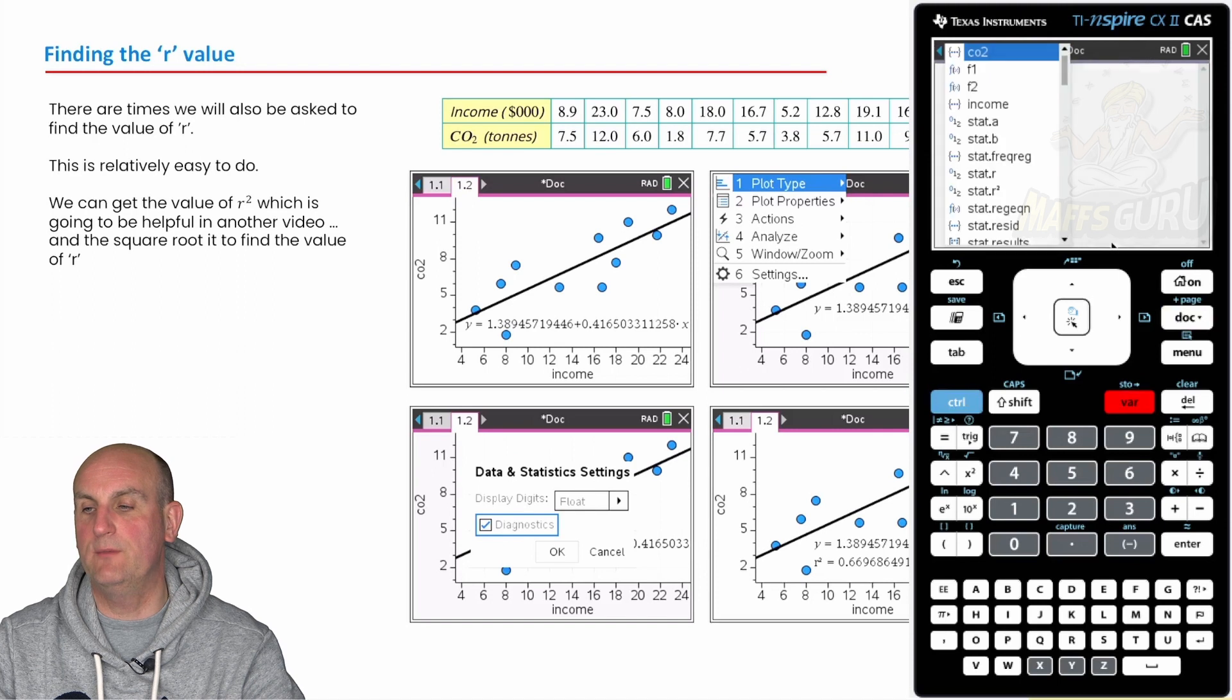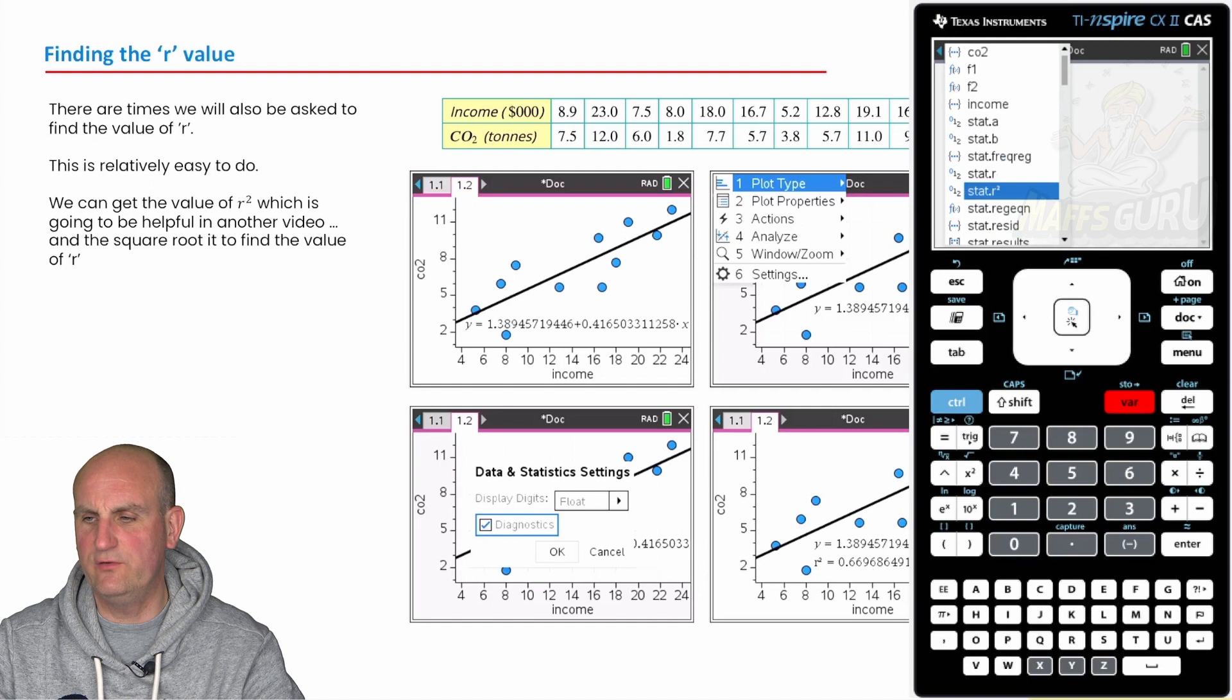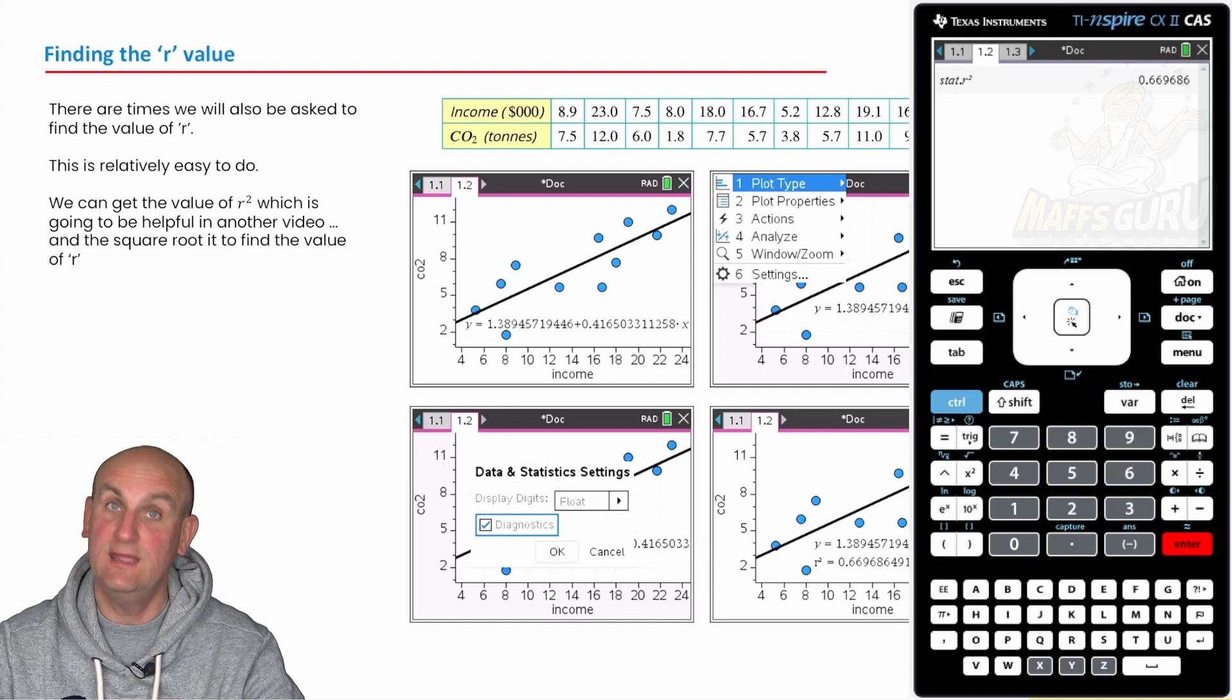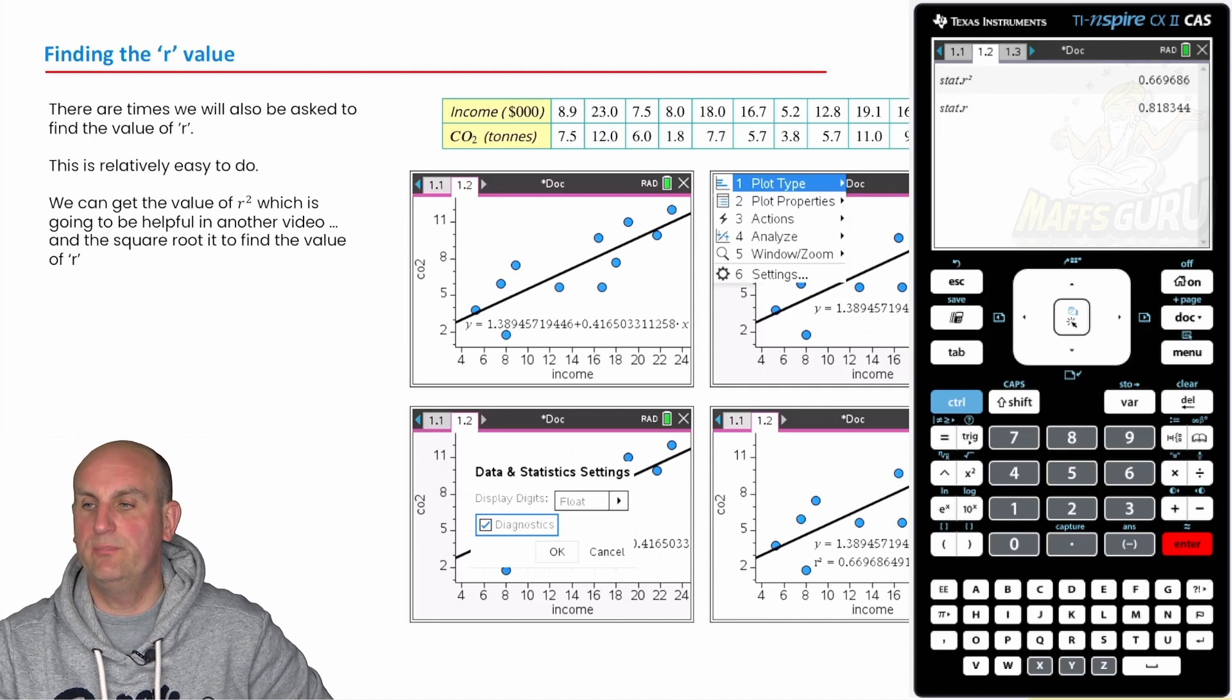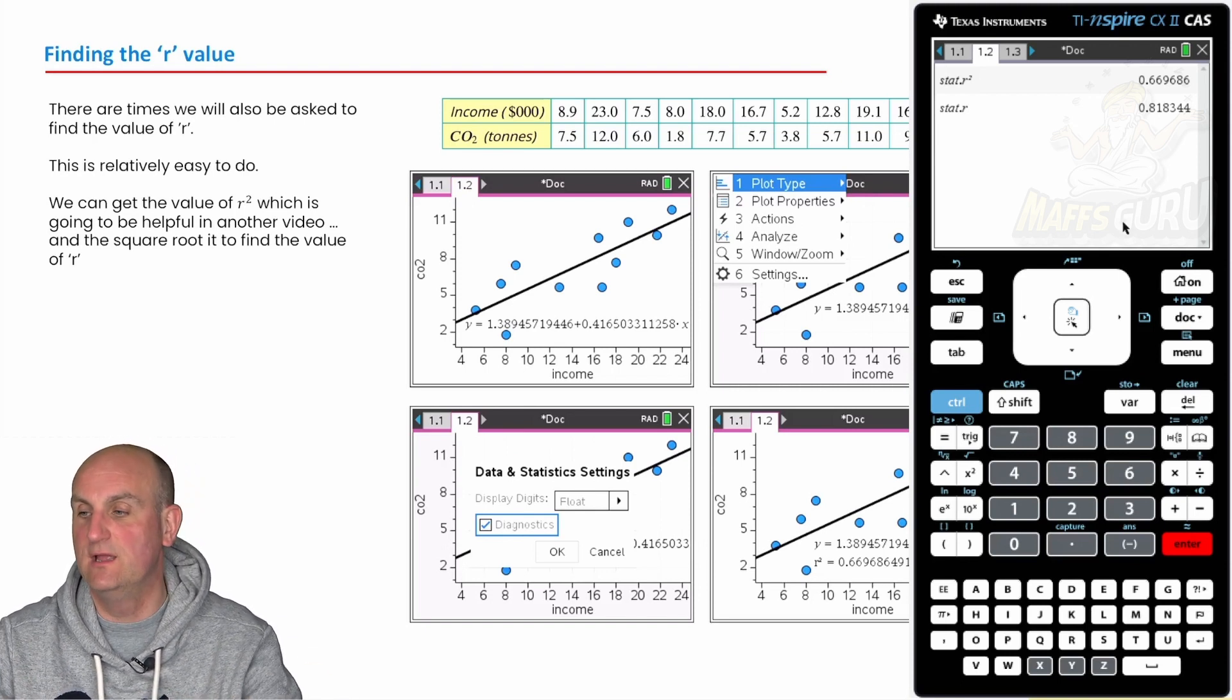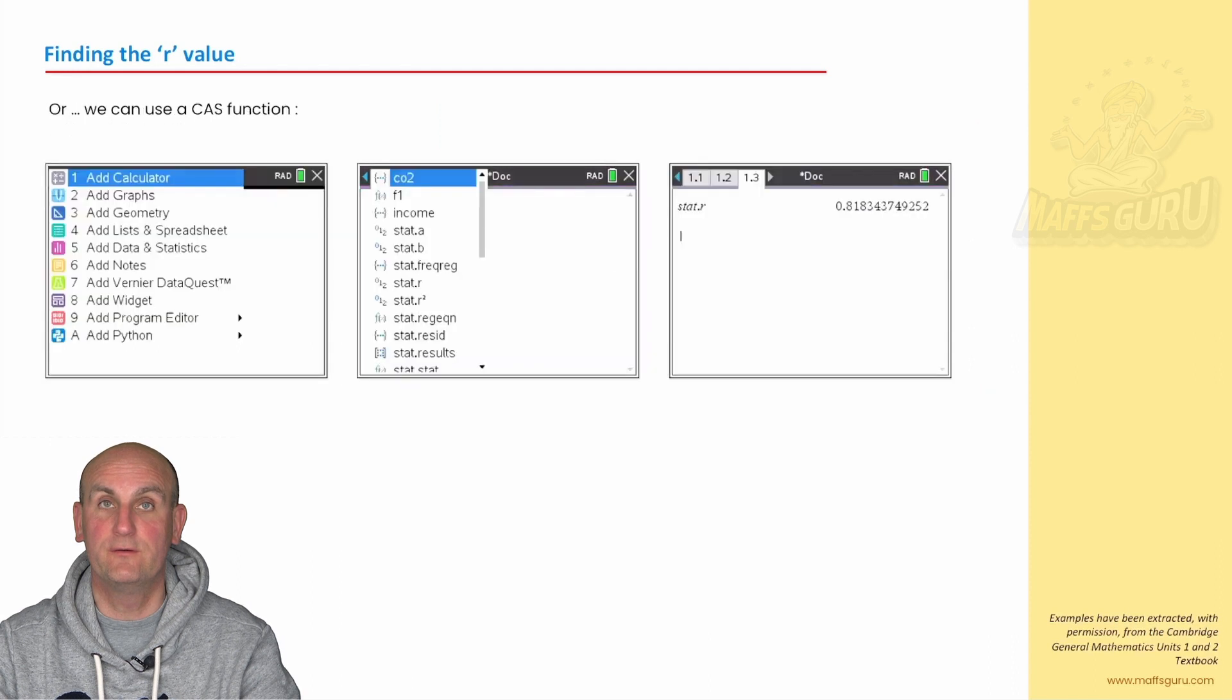Now, I don't know whether you notice, but when I hit my var value, I have income, I have CO2, but suddenly got all of these different things here. Hold on a moment. I've got stat.r squared and stat.r. Well, if I do the stat.r squared and hit enter, 0.66 and hold on a moment, that looks exactly the same as the r squared on my graph. It's because it is. Your calculator very kindly not only draws it, it stores it for you. So if I go to stat.r and hit enter, I get 0.818344, which is what I was looking for. So your calculator, lots of ways of being able to do this to try and help you. But wow, you've got to understand what it is you're actually doing first.